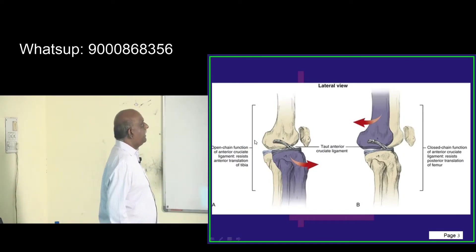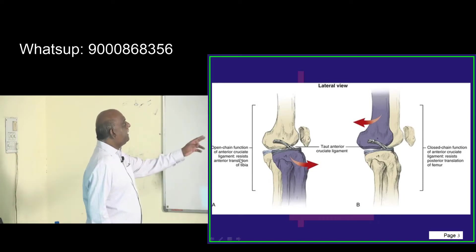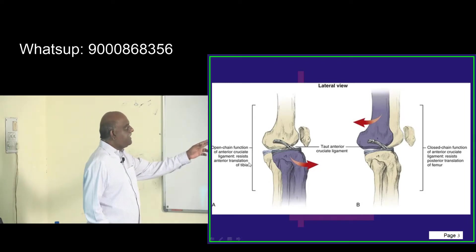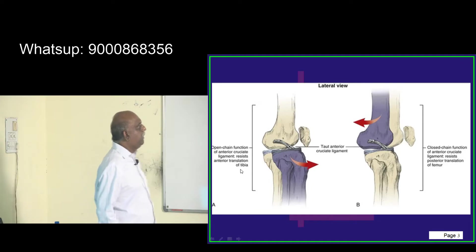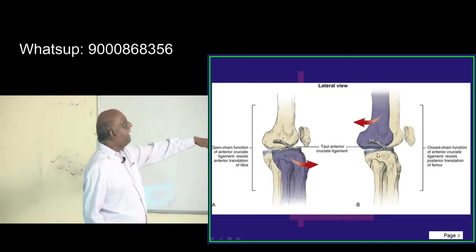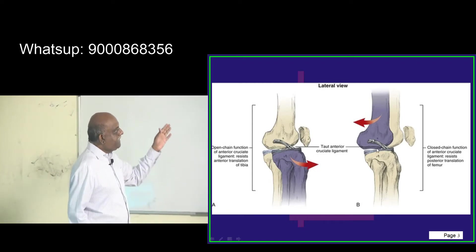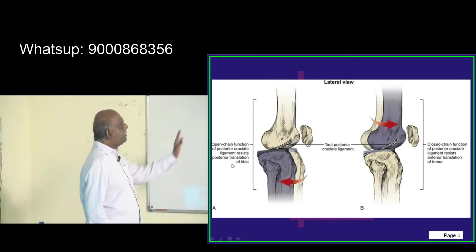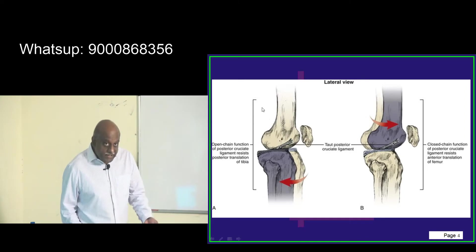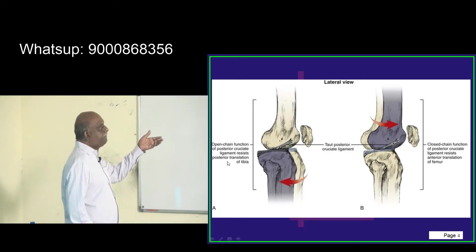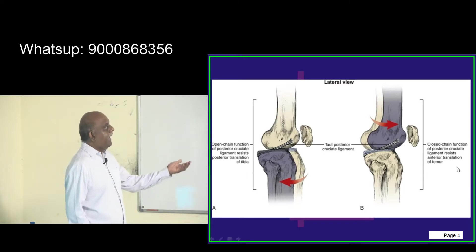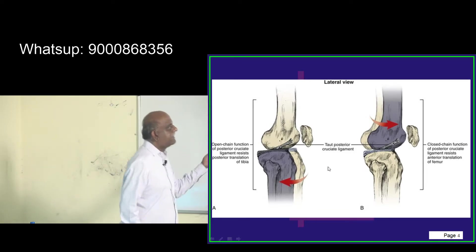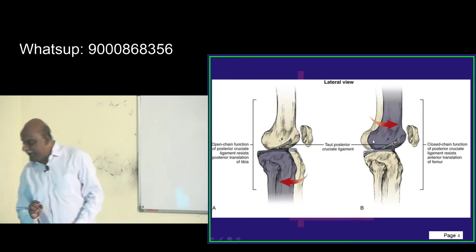If you look at the lateral view, the anterior cruciate ligament's open chain function is it resists the anterior translation of the tibia, and the closed chain function is it resists the posterior translation of the femur. Similarly, the open chain function of the posterior cruciate ligament is it resists the posterior translation of the tibia, and the closed chain function is it resists the anterior translation of the femur.